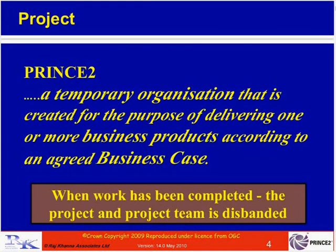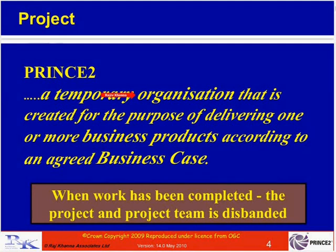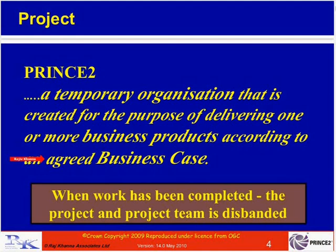Here is a textbook definition of PRINCE2. A project is a temporary organisation — by temporary we mean it has a start, a middle, and an end. It is a group of people brought together to deliver one or more business products. These individuals take on a project role, which is generally different from their business as usual. Those products are delivered according to an agreed business case, which answers the question: why is this project being done? When the work is completed, the project and project team are disbanded.